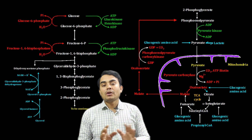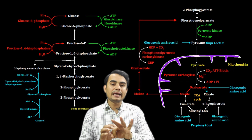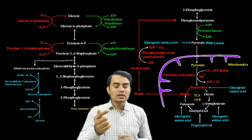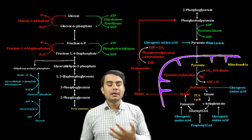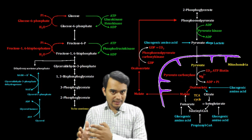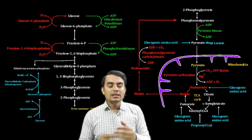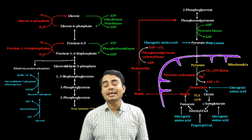In glycolysis, there are ten total steps, but out of the ten, all are reversible except three steps. The first step: glucose is phosphorylated to form glucose-6-phosphate. The third step: fructose-6-phosphate is phosphorylated to form fructose-1,6-bisphosphate. The last (tenth) step: phosphoenolpyruvate forms pyruvate. These three steps are irreversible.